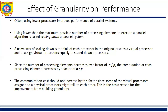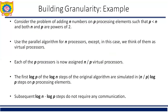Often, using fewer processors improves the performance of a parallel system. A naive way of scaling down is to think of each processor in the original case as a virtual processor and to assign virtual processors equally to the scaled-down processors. Since the number of processing elements decreases by a factor of n/p, the computation at each processing element increases by n/p. The computation cost should not increase by this full factor since some virtual processors assigned to the same physical processor may communicate locally — this is the basic reason for improvement from building granularity.